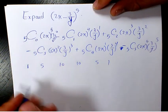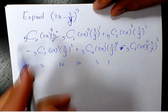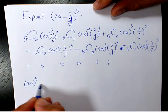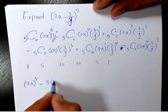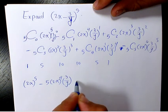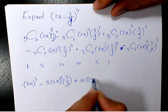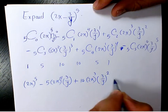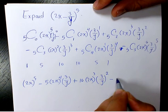So that's going to be 1 times (2x)^5 minus 5(2x)^4(3/y) plus 10(2x)^3(3/y)^2 minus 10